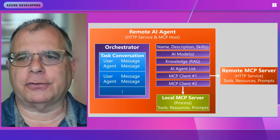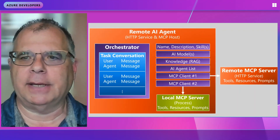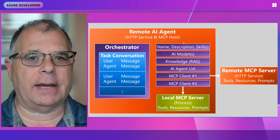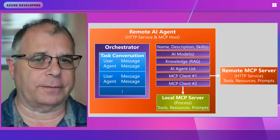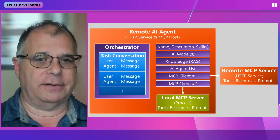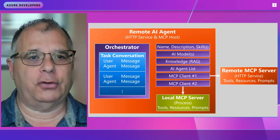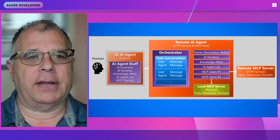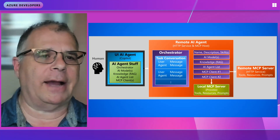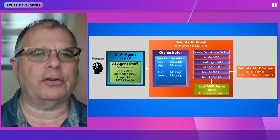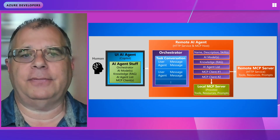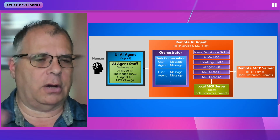MCP servers have a couple of additional features that are much less commonly used, like sampling and logging, so I won't go into those. The last piece is that this is a remote AI agent implemented as an HTTP service. Other HTTP service agents on the internet, if they have the URL for this agent, can simply call it — enabling one agent to talk to another. An agent can talk through the internet to the remote AI agent, and the agent on the left has all the regular AI agent components: its own orchestrator, AI models, knowledge base, agent list for talking to other agents, and its own set of MCP servers and clients.